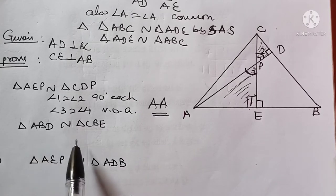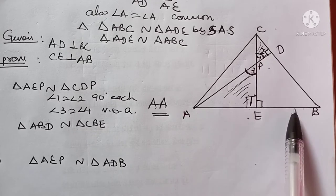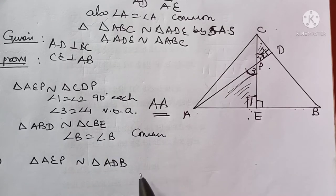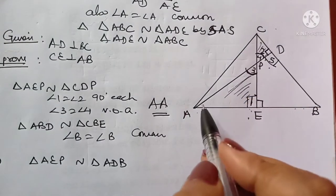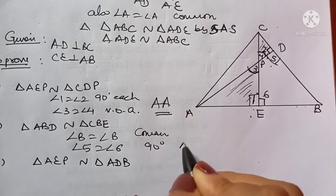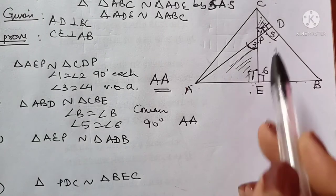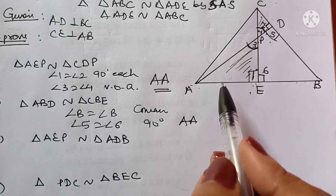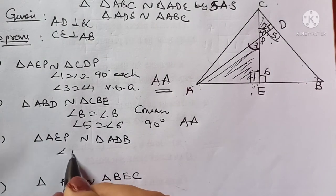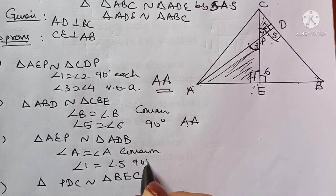Second part: triangle ABD is similar to triangle CBE. For the third part, consider triangles AEP and ADB — they are matching. Angle A is equal to angle A (common). In triangle AEP, angle 1 is 90°, and in triangle ADB, angle 5 is 90°. Again, these are similar by AA rule.